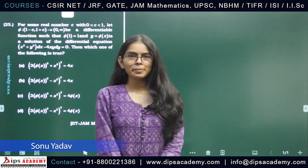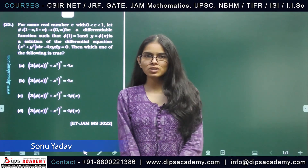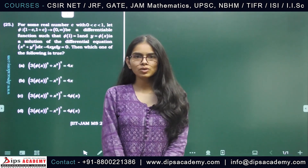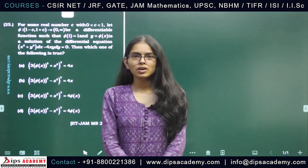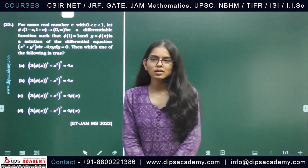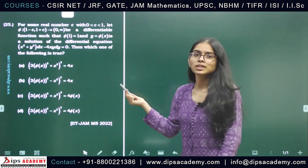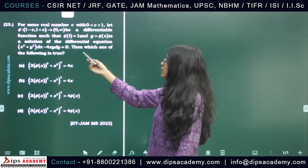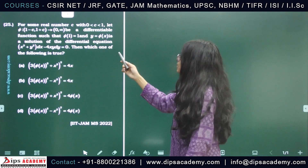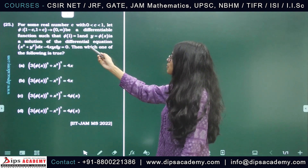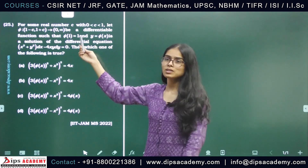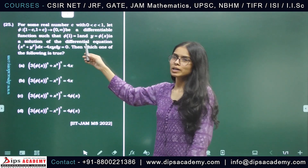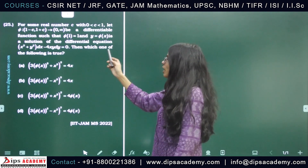Hello everyone, we are back again with a new question from the 2022 JAM Mathematics exam, from the subject of ordinary differential equations. The question gives us a differential equation: (x² + y²)dx − 4xy dy = 0, and a differentiable function φ from the open interval (1−c, 1+c) to (0, ∞), with φ(1) = 1.